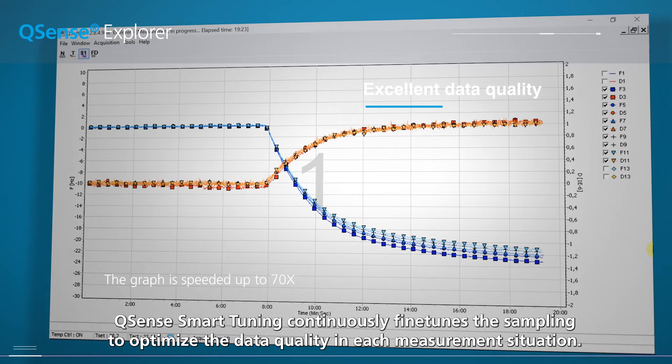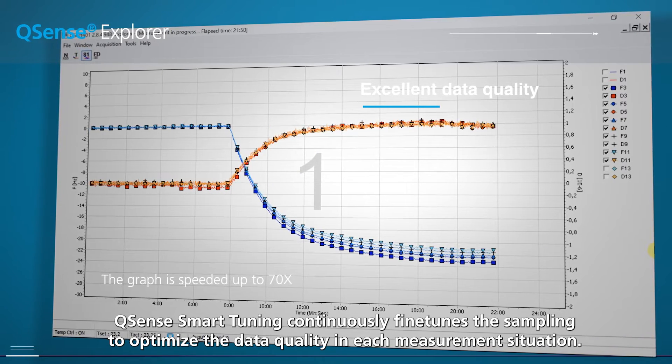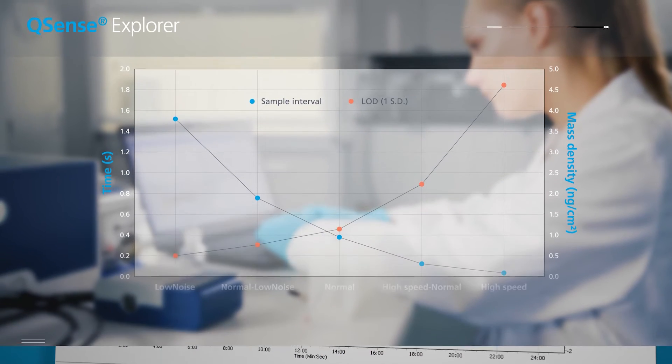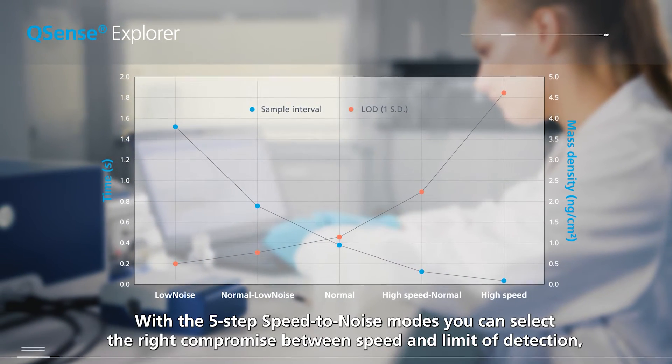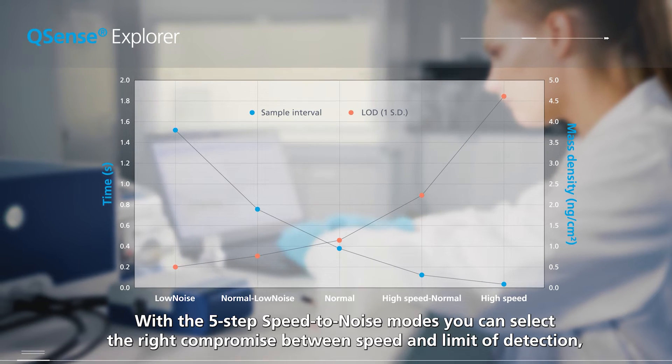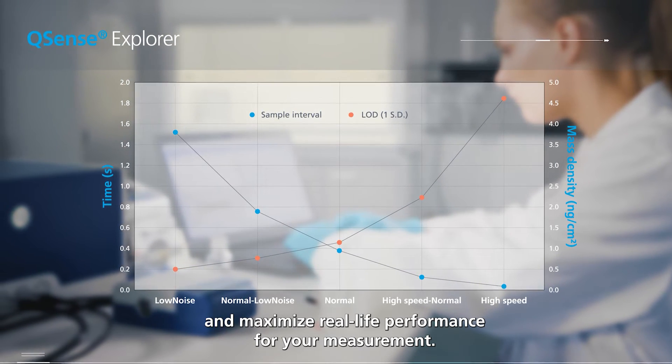QSENS Smart Tuning continuously fine-tunes the sampling to optimize the data quality in each measurement situation. With the five-step speed to noise modes, you can select the right compromise between speed and limit of detection and maximize real-life performance for your measurement.